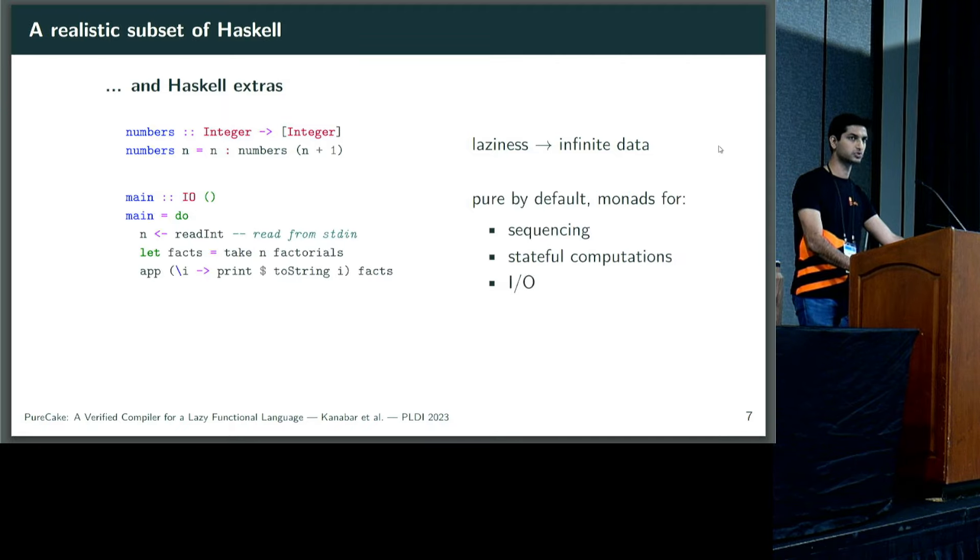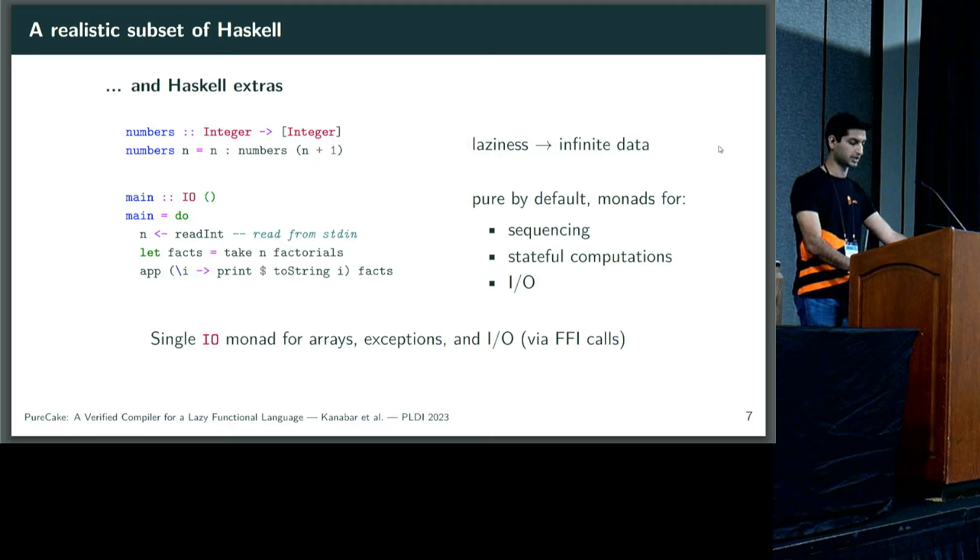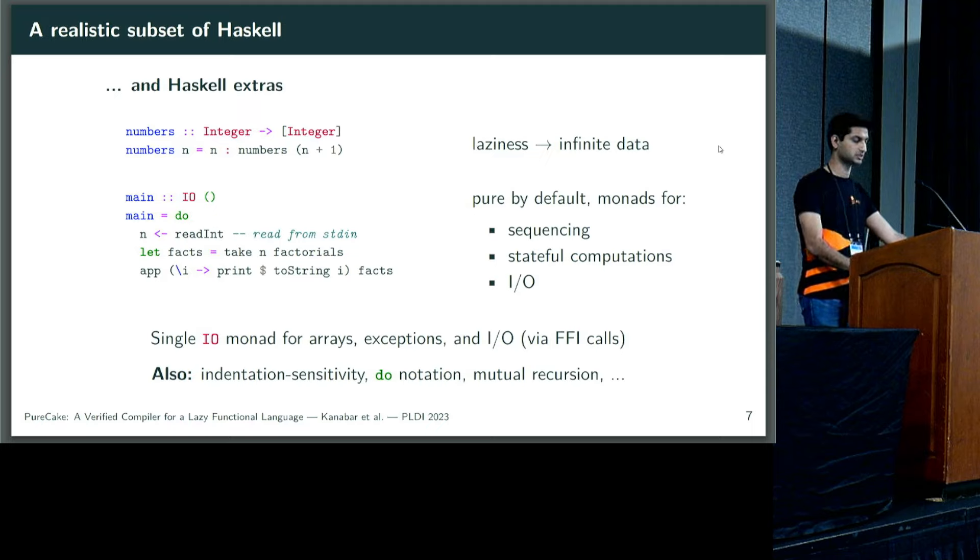More than standard functional idioms, it has features mostly associated with Haskell, such as laziness. Expressions are only computed as deeply as they are inspected, and not recomputed on reuse, so we can easily construct infinite data structures. By default, all PureLang functions are pure, and we have monads which provide monadic sequencing, stateful computation, and IO. In particular, we provide a single IOMonad which has mutable arrays, exception handling, and interaction with the surrounding execution environment via FFI calls. We also inherit other features from Haskell, like indentation-sensitive syntax, do notation, mutually recursive top-level definitions, and more.